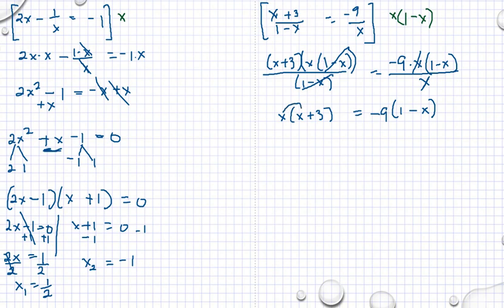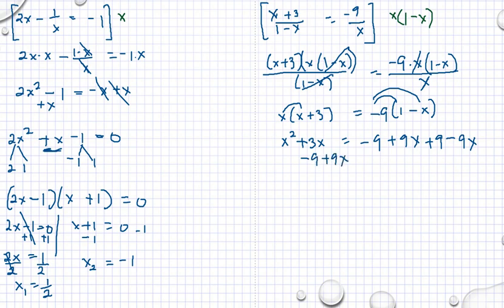After cancellation, this fraction becomes 1, then we have x times x plus 3, and this one also becomes 1, giving negative 9 times 1 minus x. Expanding: x squared plus 3x is equal to negative 9 plus 9x. We need to add both sides of the equation by 9 and subtract by 9x. So we have x squared plus 3x minus 9x plus 9 is equal to 0, which simplifies to x squared minus 6x plus 9 is equal to 0.